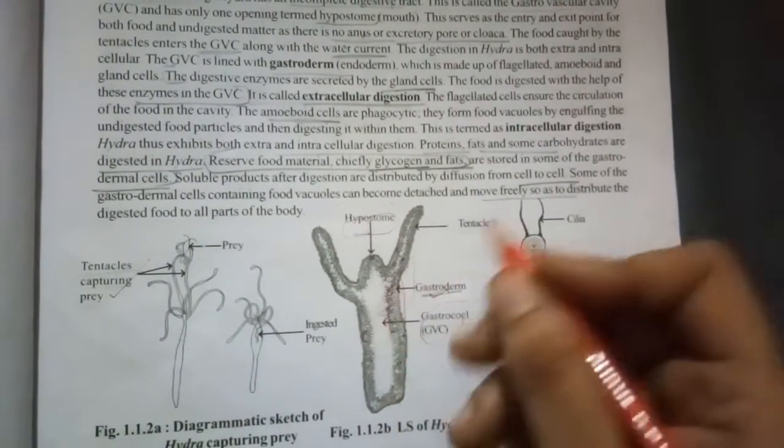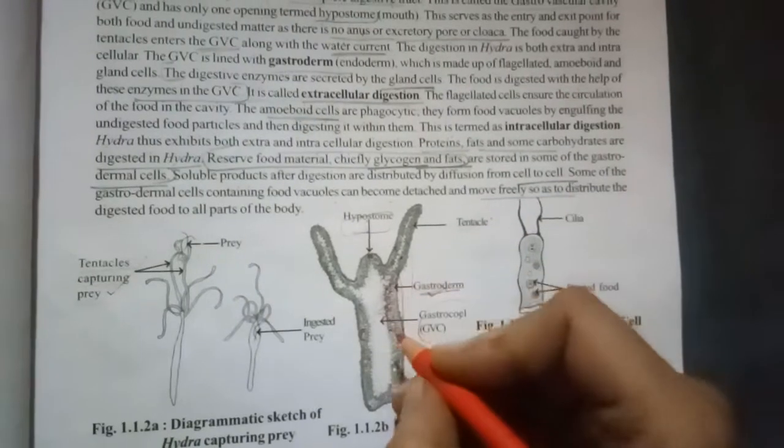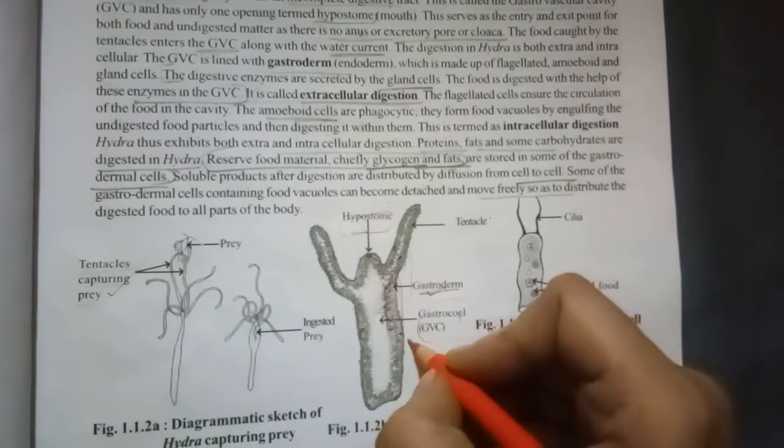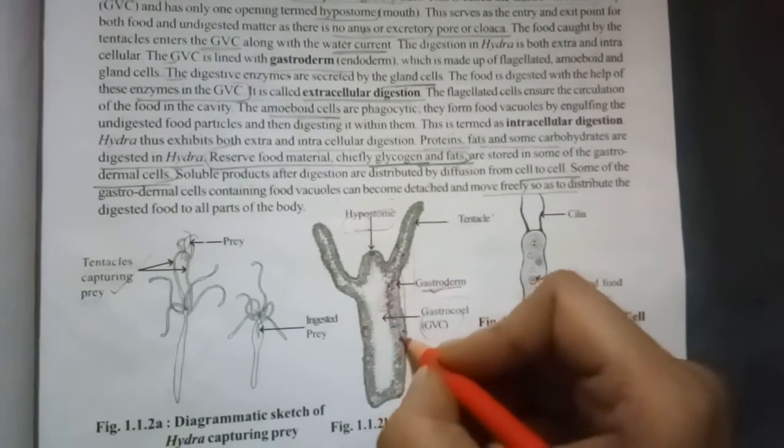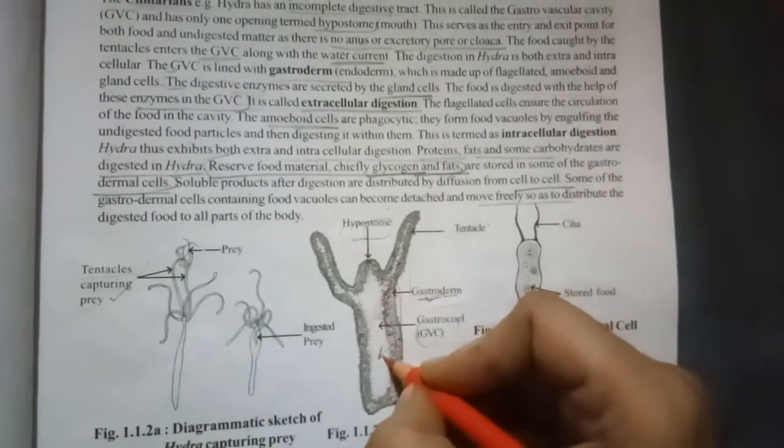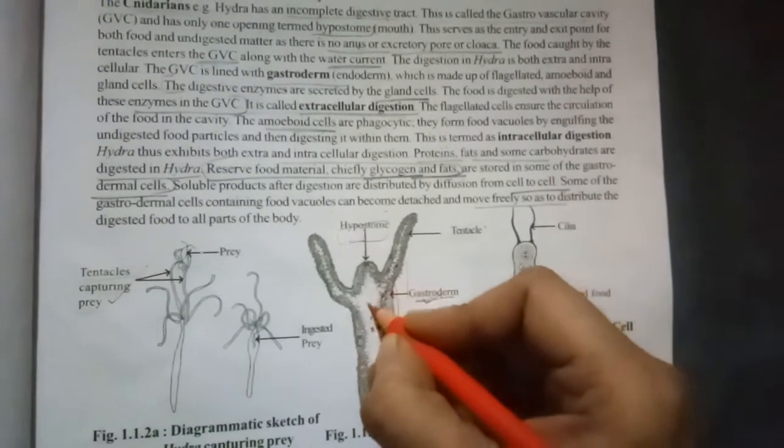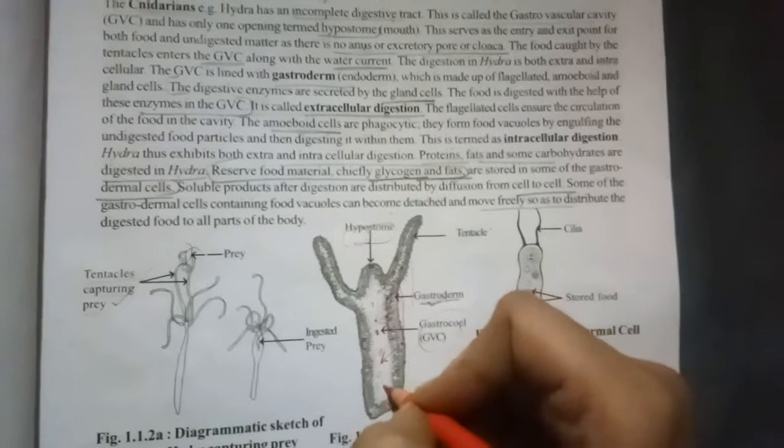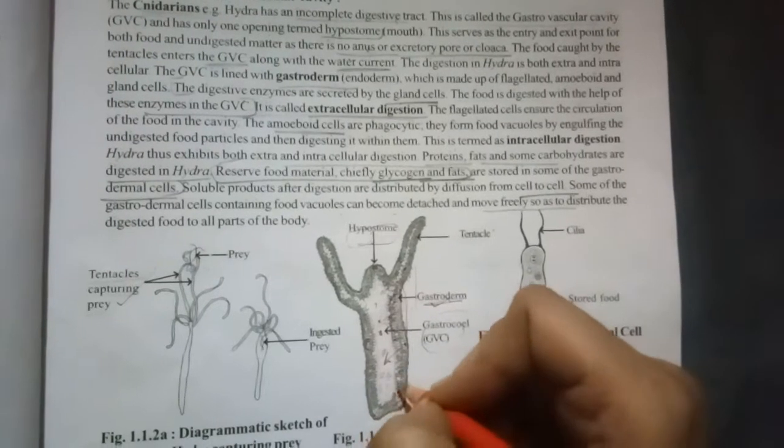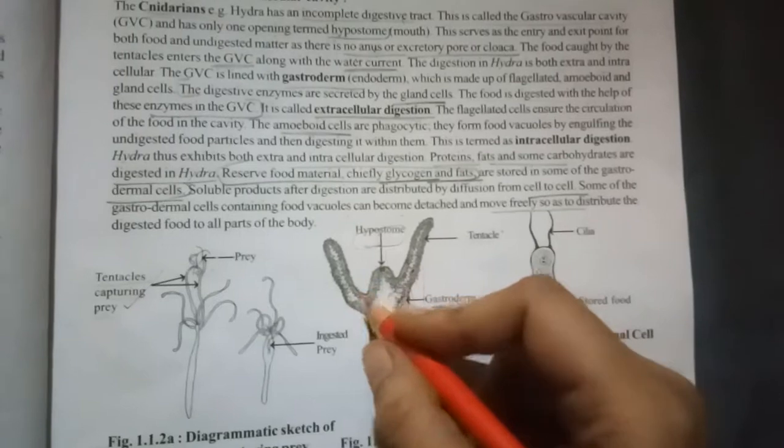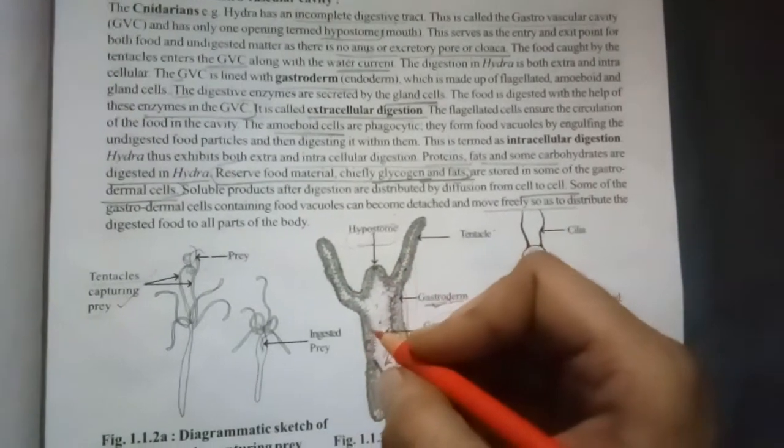These cells in the gastroderm may get detached from the layer and these cells may move and they will try to serve the food to all the cells of the body or all the parts of the body.